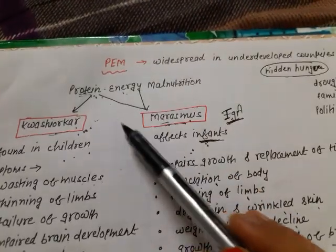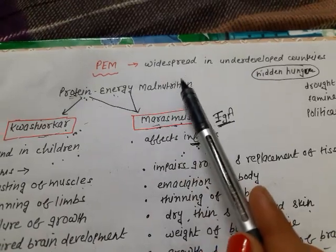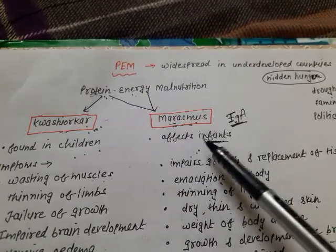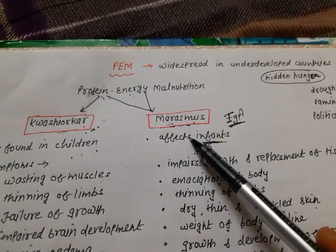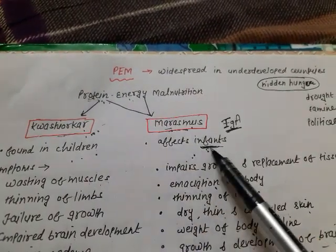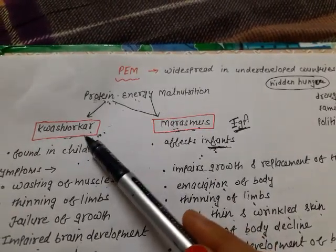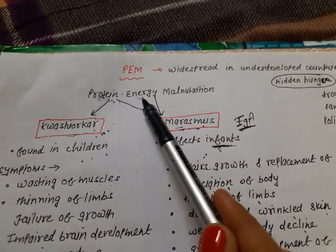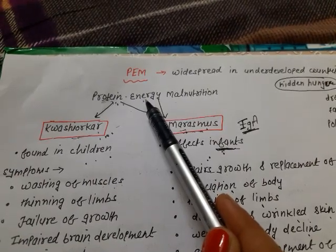This was all about PEM — Protein Energy Malnutrition. These two disorders come under PEM. Marasmus is produced by the simultaneous deficiency of protein as well as calories and is found in infants less than a year in age. Kwashiorkor is produced by protein deficiency unaccompanied by calorie deficiency.